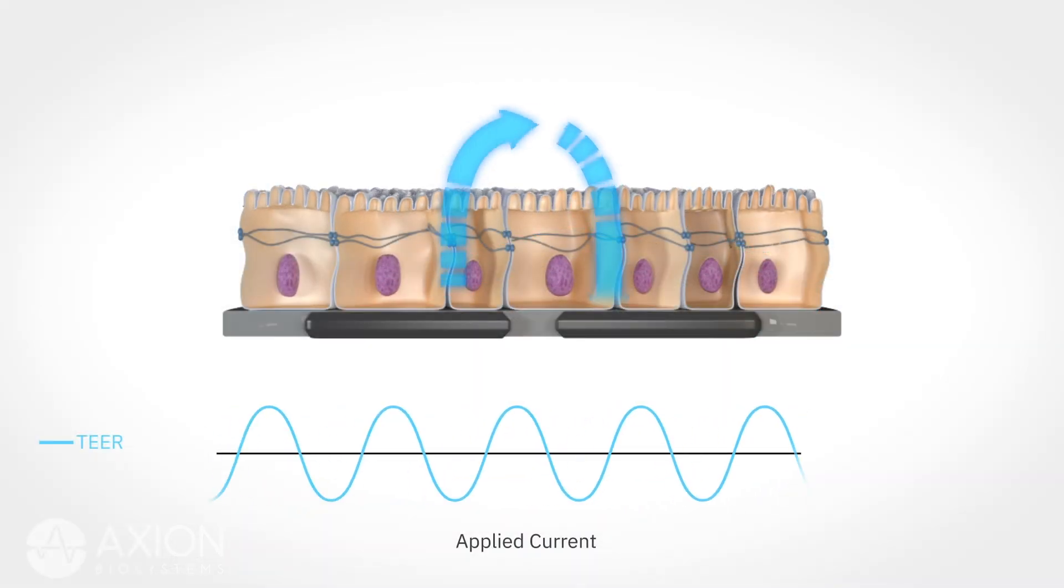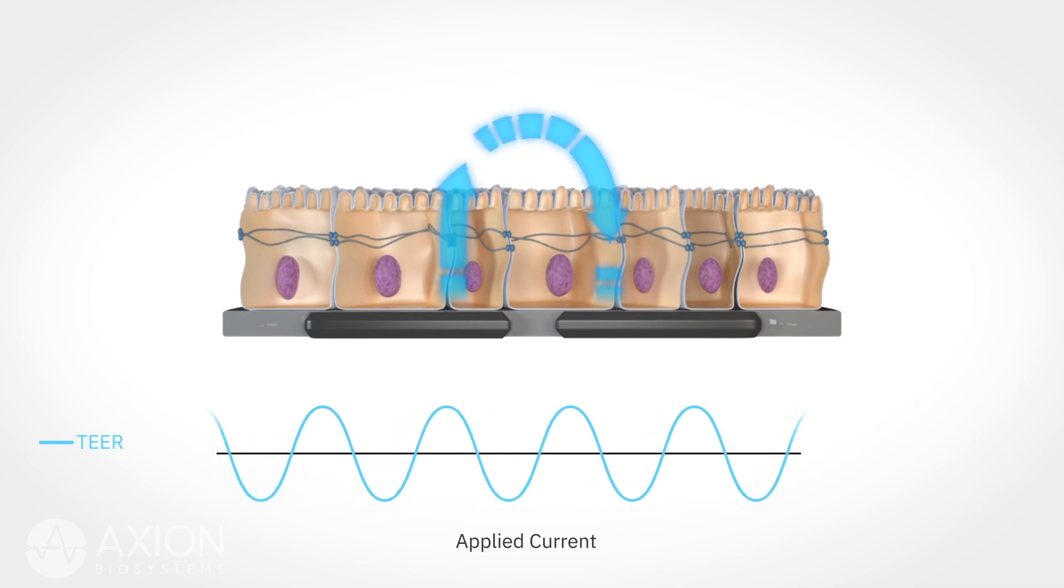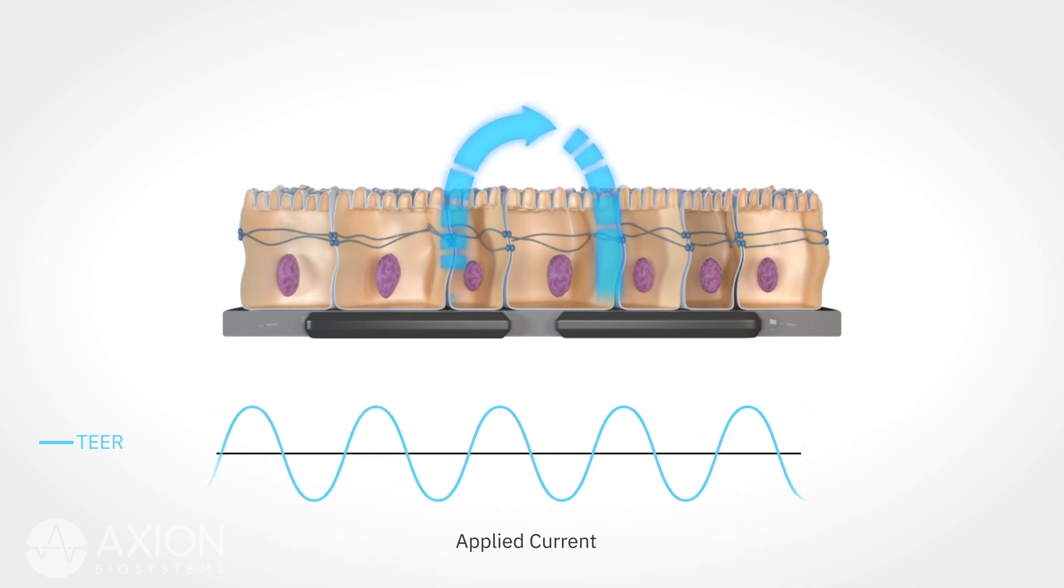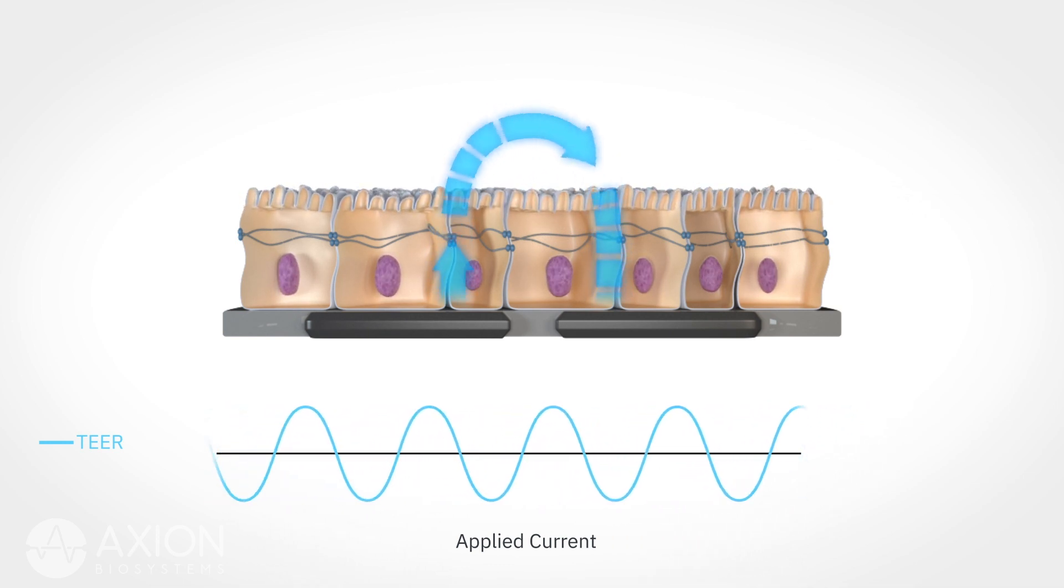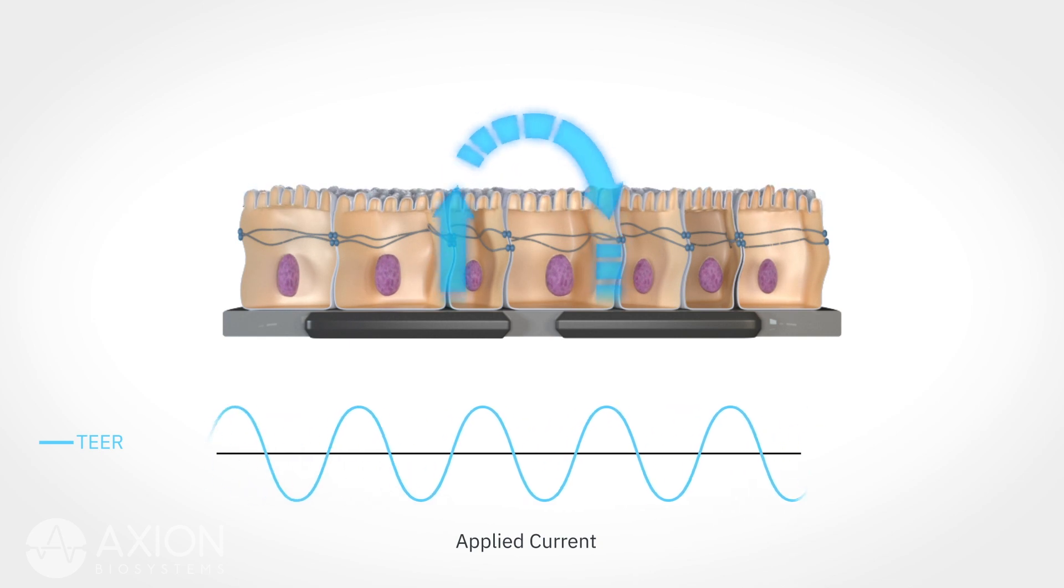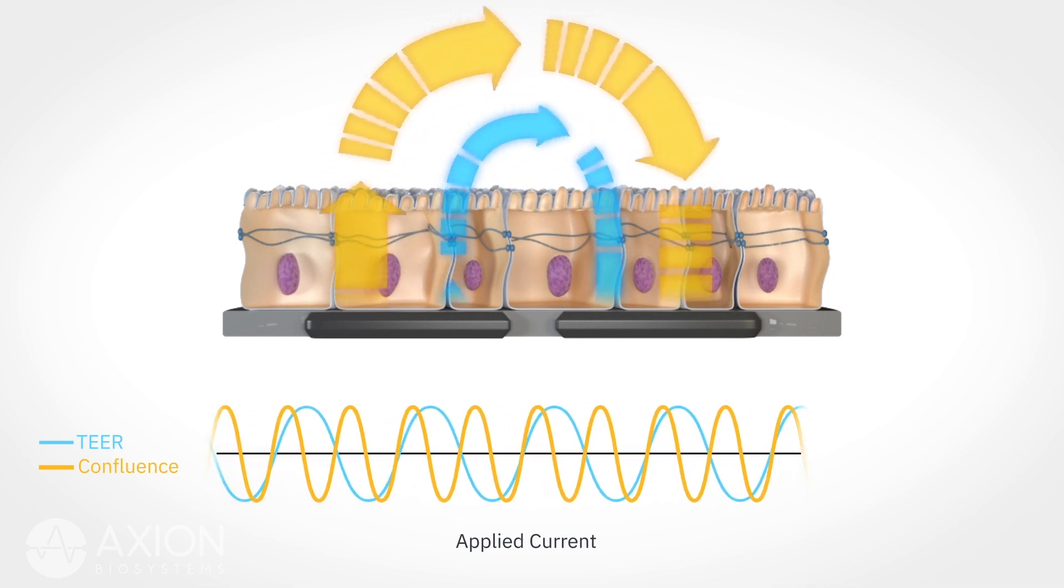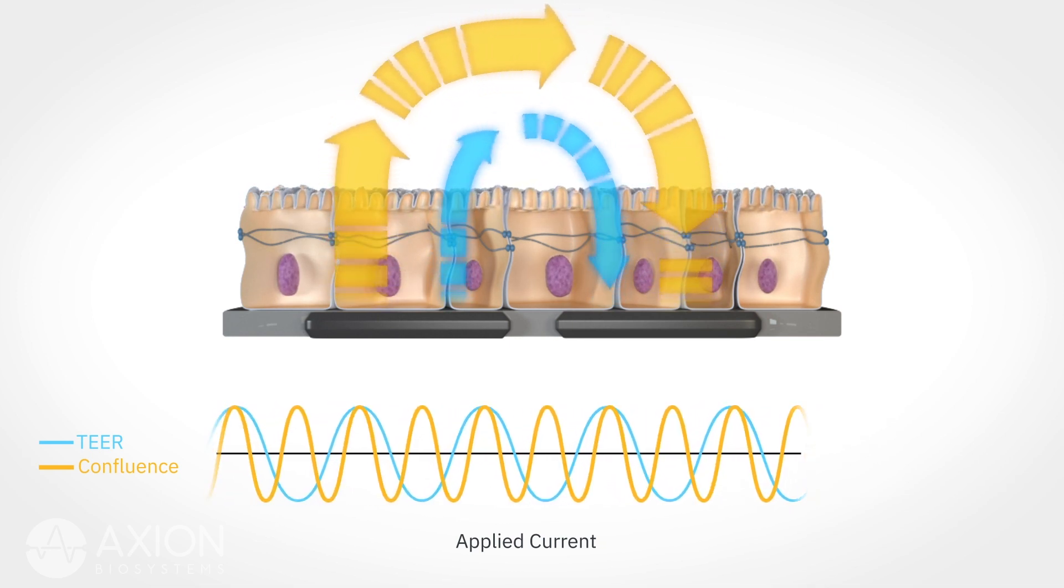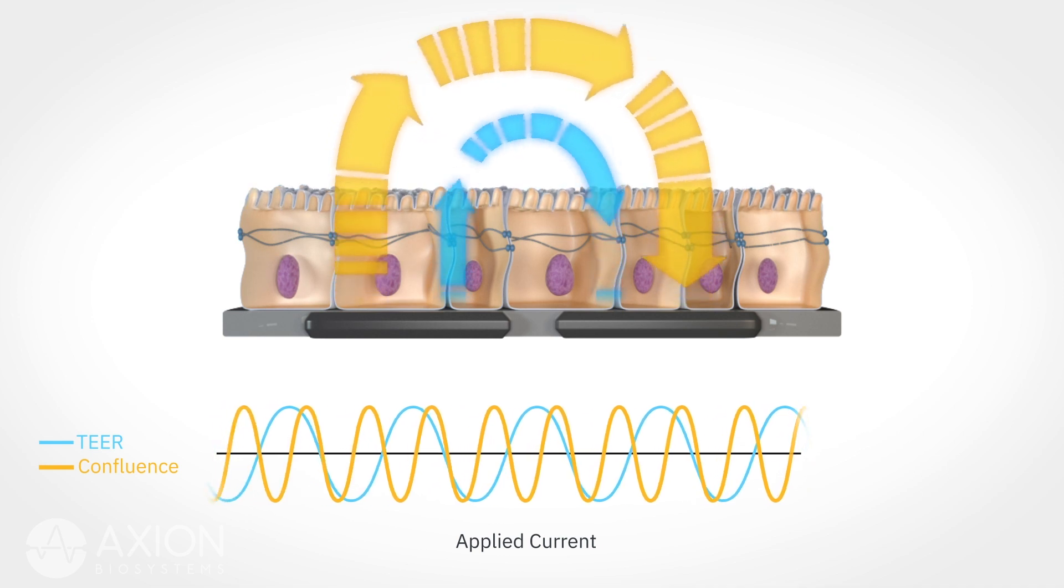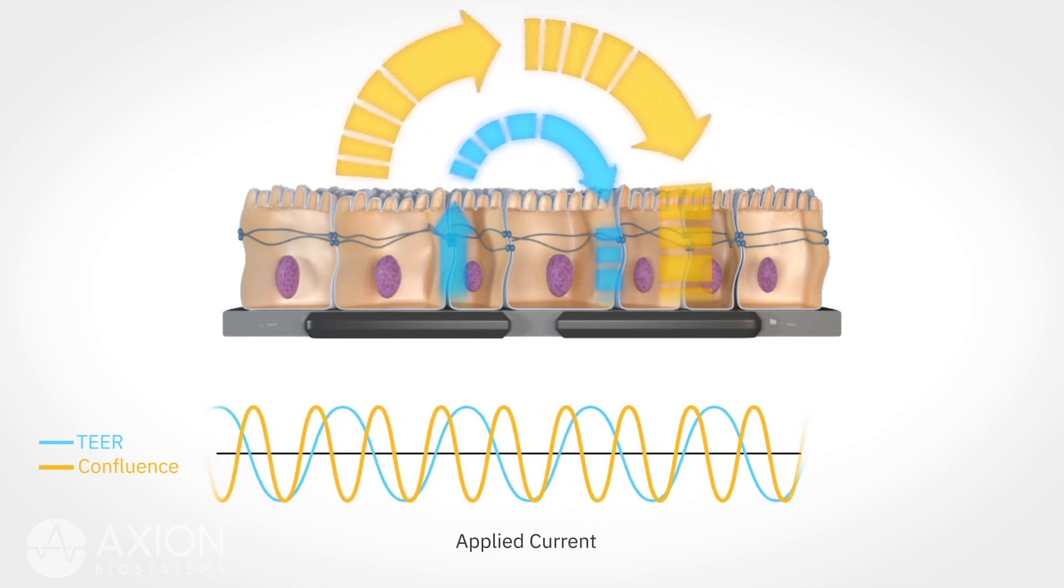By measuring at multiple frequencies, the Maestro-Z can simultaneously track TIR and confluence. Low-frequency measurements are sensitive to the barrier properties, while high-frequency measurements detect cell confluence over the well bottom. By measuring both, differences in confluence are controlled and accounted for in your analysis.